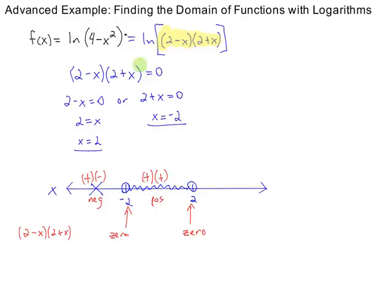Finally, the last region, numbers bigger than 2, say 10. 2 minus 10 is negative. 2 plus 10 is positive. So, any x value here makes your argument negative. And we already said we cannot take the logarithm of a negative number.